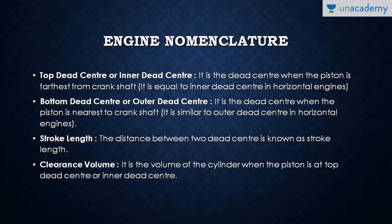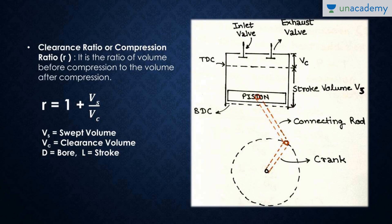Now, engine nomenclature — this is very important. You must keep in mind: what is Top Dead Center (TDC), Bottom Dead Center (BDC), stroke length, and clearance volume. The Top Dead Center, or Inner Dead Center, is the dead center when the piston is farthest from the crankshaft. As shown in the figure, the piston at this position is at TDC. In a horizontal engine it is called the Inner Dead Center. Note that the piston never touches the head of the cylinder — there is always some volume left, known as the clearance volume.